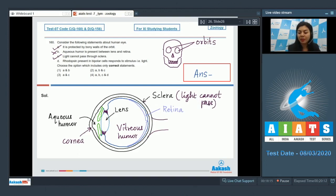Statement D, that rhodopsin present in bipolar cells responds to stimulus, that is light. This is incorrect. Rhodopsin is present in photoreceptors. This is incorrect. Rhodopsin is present in rod cells and not in bipolar cells. So in the given four statements, two are correct, and the correct answer here is option number three.